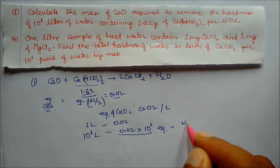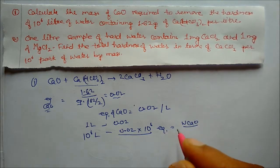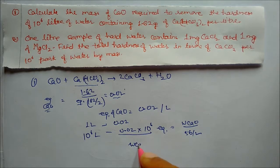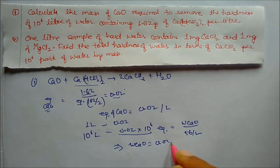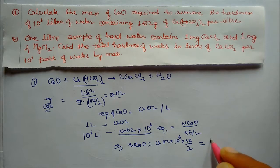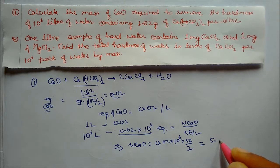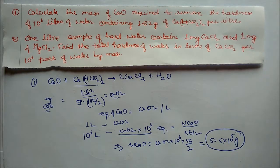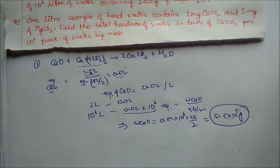This total equivalents value equals weight of calcium oxide divided by (56/2), so weight of CaO = 0.02 × 10⁶ × (56/2). Solving gives the answer: 5.6 × 10⁵ grams. This is our answer for question one.